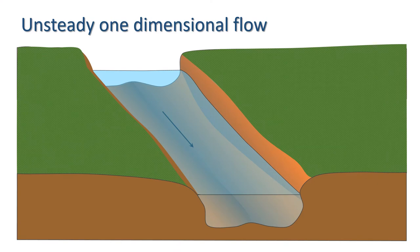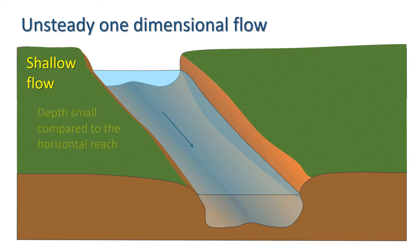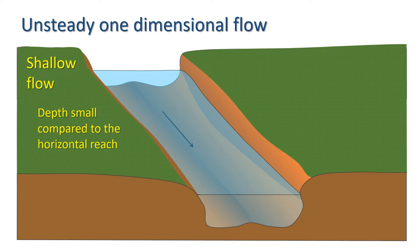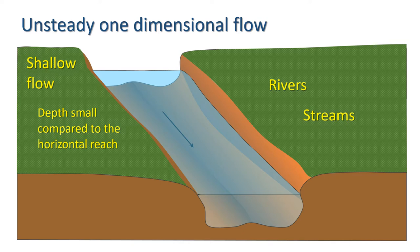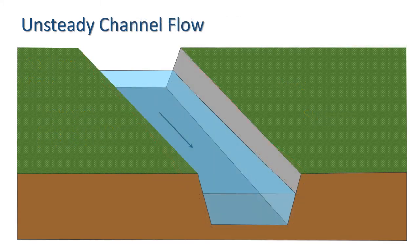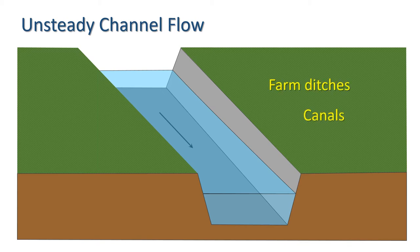There are many circumstances in which we are interested in shallow water flow, where we define shallow to mean that the water depth is small compared to the horizontal reach of the water. Examples of this type of flow include natural channels such as rivers and streams, which generally have highly variable cross-sectional shapes and tend to meander. They can also be artificial channels such as farm ditches and canals, which tend to be straighter and have a more uniform cross-section.